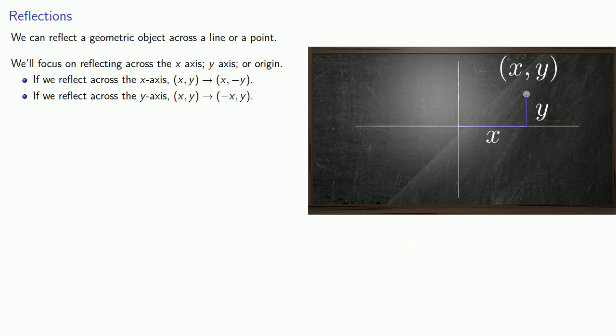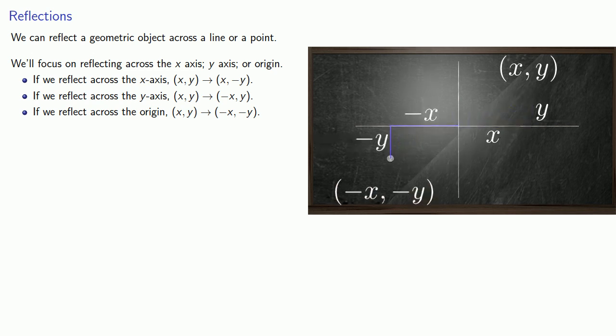And if we reflect across the origin, a point whose coordinates are (x, y) becomes a point whose coordinates are (negative x, negative y).